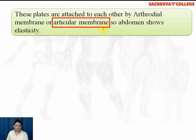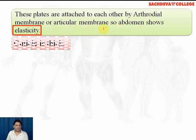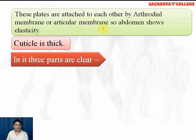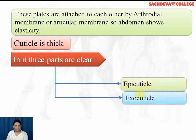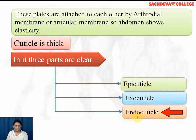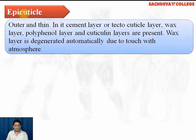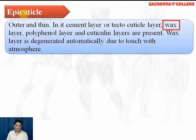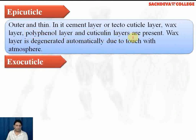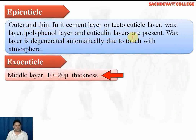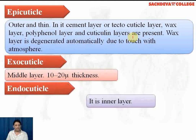The arthroidal membrane, also called the articular membrane, provides elasticity. The cuticle is thick, and 3 parts can be clearly differentiated: the epicuticle (outer, thin), the exocuticle (middle layer), and the endocuticle (innermost layer). The epicuticle contains a cement layer known as the tectocuticle layer, a wax layer, a polyphenol layer, and a cuticulin layer. The wax layer is degraded automatically due to contact with the atmosphere.